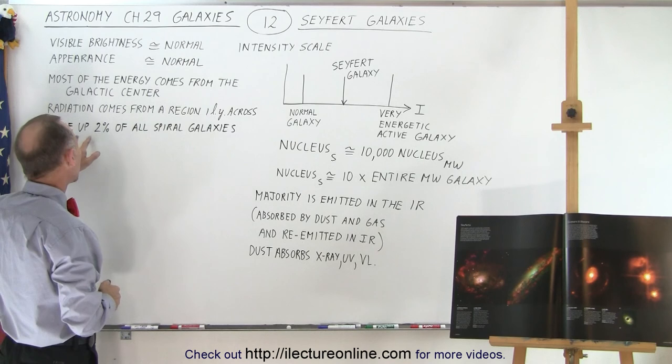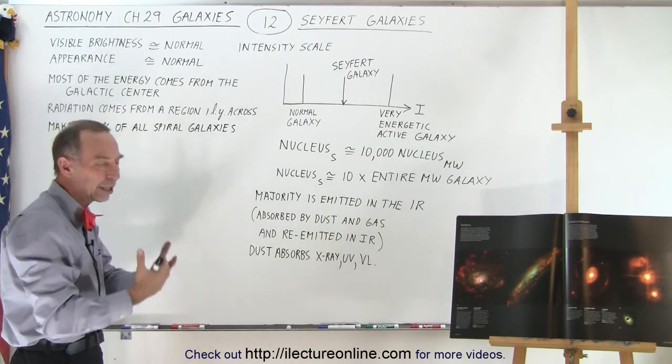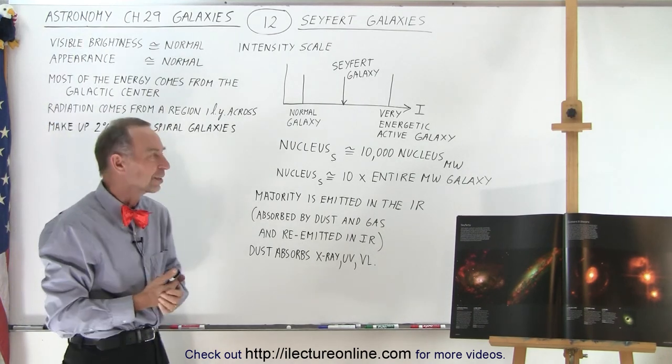Notice that we estimate about 2% of all spiral galaxies fall in the category of being one of those Seyfert galaxies.